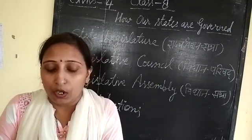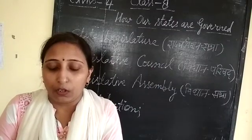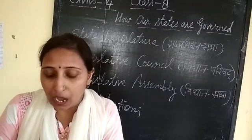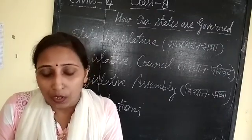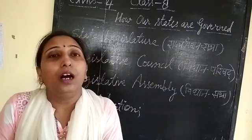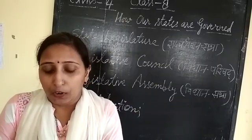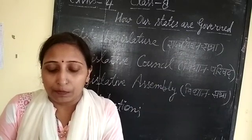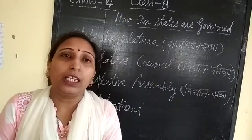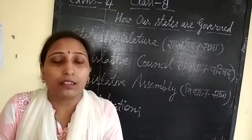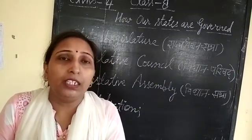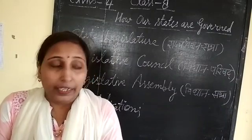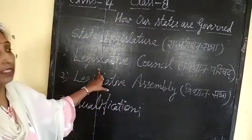Third, they must not hold any office of profit under the government of India — meaning they should not have any other source of income from government. Fourth, they must be of sound mind and must be free from any legal disqualification — meaning their mind must be focused only on the development and progress of the people. These are the qualifications of the members of these two assemblies.